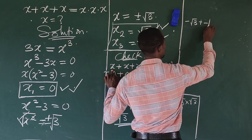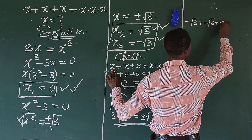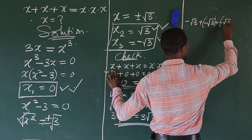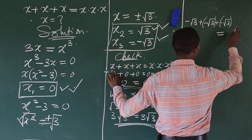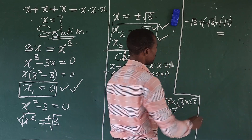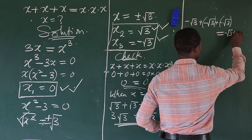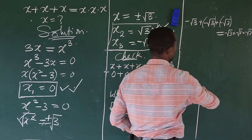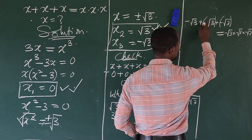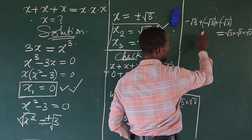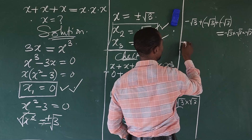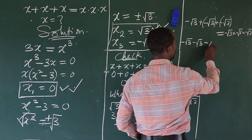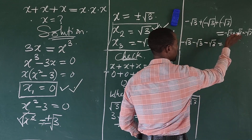So we have minus the square root of 3, minus the square root of 3, minus the square root of 3. For us not to be confused, let's put these in brackets. Everything will equal minus root 3 times minus root 3 times minus root 3. So on the left, plus times minus gives us minus. We're going to have minus root 3, minus root 3, minus root 3.